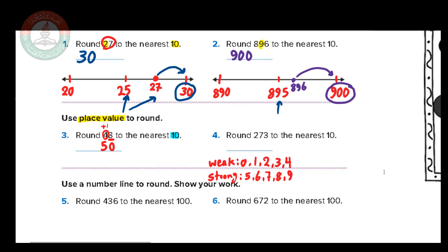Another example: round 273 to the nearest 10. Circle the tens digit — in 273, the 3 is ones, 7 is tens, 2 is hundreds. So we circle the 7 and underline the ones, which is 3. Everything to the right of the circle becomes 0, so the 3 becomes 0. Now, is the underlined digit 3 weak or strong? The 3 is weak.